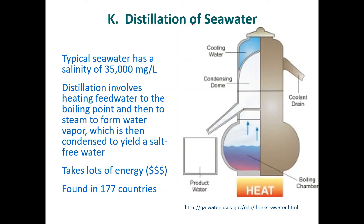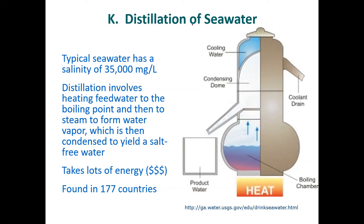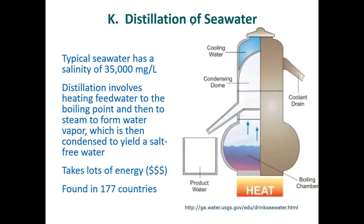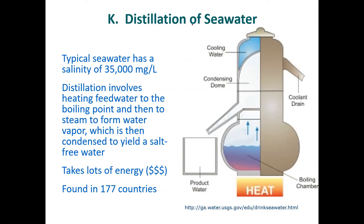Desalination is expensive, but sometimes it's all you have — like in Dubai, basically in the middle of a desert. At least in Dubai they have fossil fuels to power it. There are lots of people talking about how to improve this process — a place like Dubai also has lots of sun, so people are experimenting with solar energy. This could be a major breakthrough sometime in the future if somebody can figure out how to do it more efficiently. Israel also has a lot of desalination plants set up.